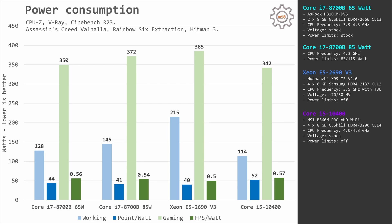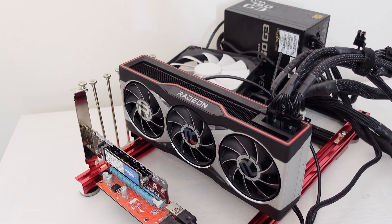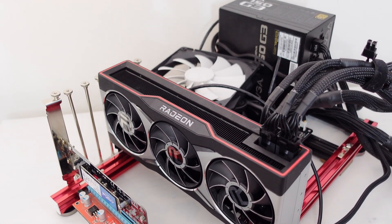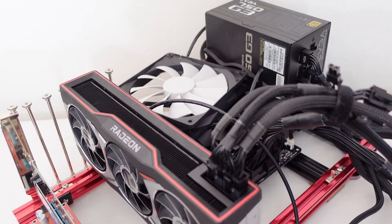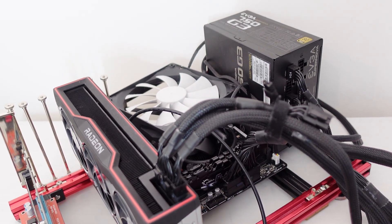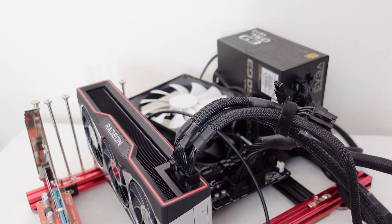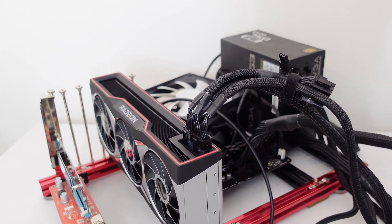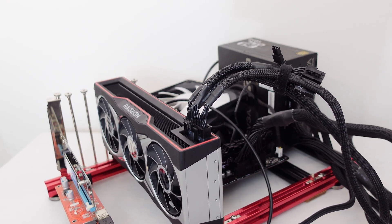In the power consumption measurements, i7-8700B delivers almost the same level of efficiency as Core i5-10400. Increasing the TDP limit to 85W somewhat spoils the efficiency, but we need to remember that i7-8700B was tested on the cheapest motherboard with a different CPU cooler and a less efficient power supply. All in all, if you are building a strictly gaming PC, I would not bother to unlock power consumption with the i7 — just leave it at the default 65W TDP configuration. The gaming performance is almost identical in both configurations, but power consumption increases.